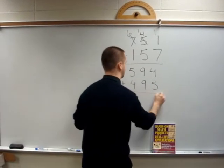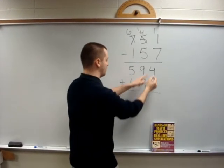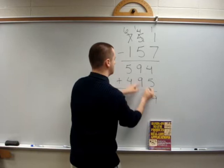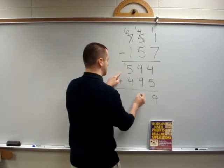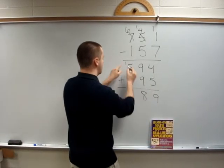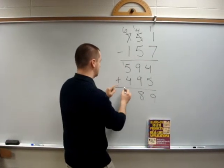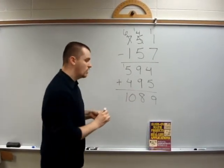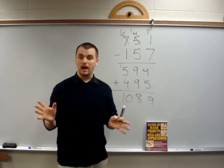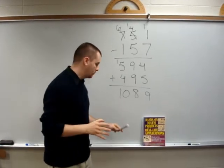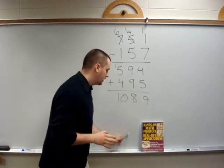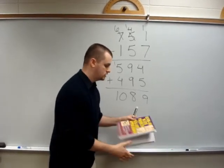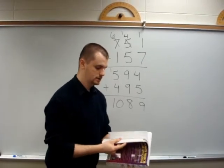And we'll add them this time. So 4 and 5 is 9, 9 and 9 is 18, 5 and 1 is 6 and carry the 1 gives 10. So 1089 is the random number that we ended up with.